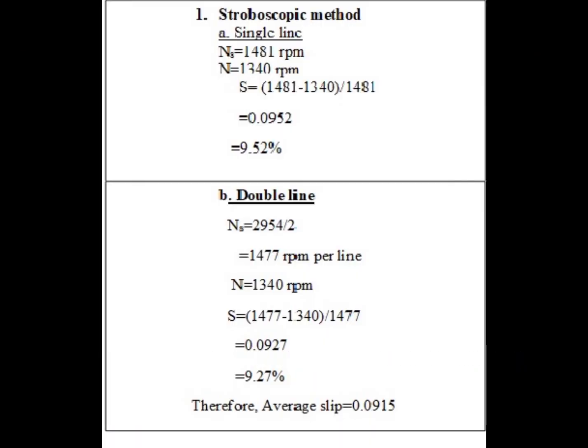After finding the speed of the motor using the double line and the single line stroboscopic meter method, we were able to get an average slip of 0.0915.